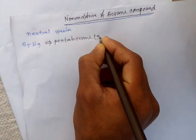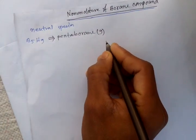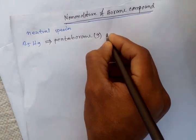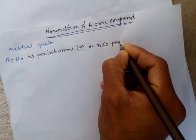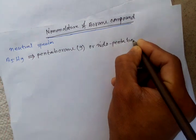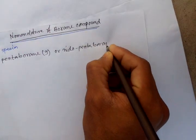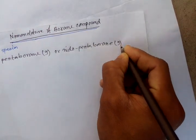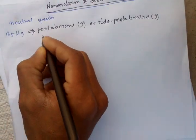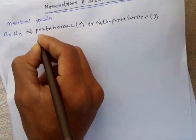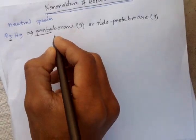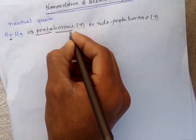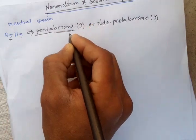Pentaborane(9), or you can say nido-pentaborane(9). First, the number of boron atoms is 5, so we write penta, and at last boron, and the number of hydrogen atoms.